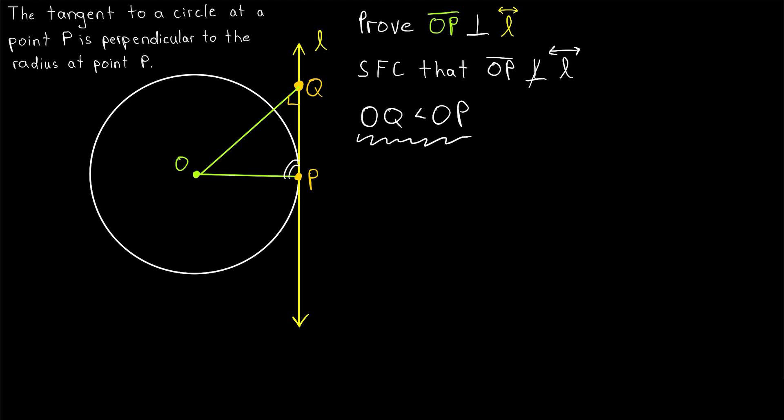All right, now, why is that helpful? Well, remember, we're looking for a contradiction. Certainly, it would be a contradiction if we could prove that OQ is greater than OP, since we also just proved that OQ is less than OP.